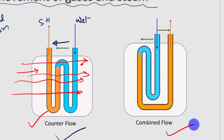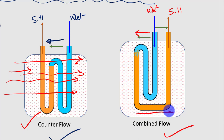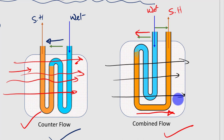In combined flow superheaters, the steam first moves in one direction and then in the opposite direction, while the hot gases move from left to right. So there are both parallel and counter flow movements, and that is why it is called combined flow — a combination of parallel flow and counter flow.